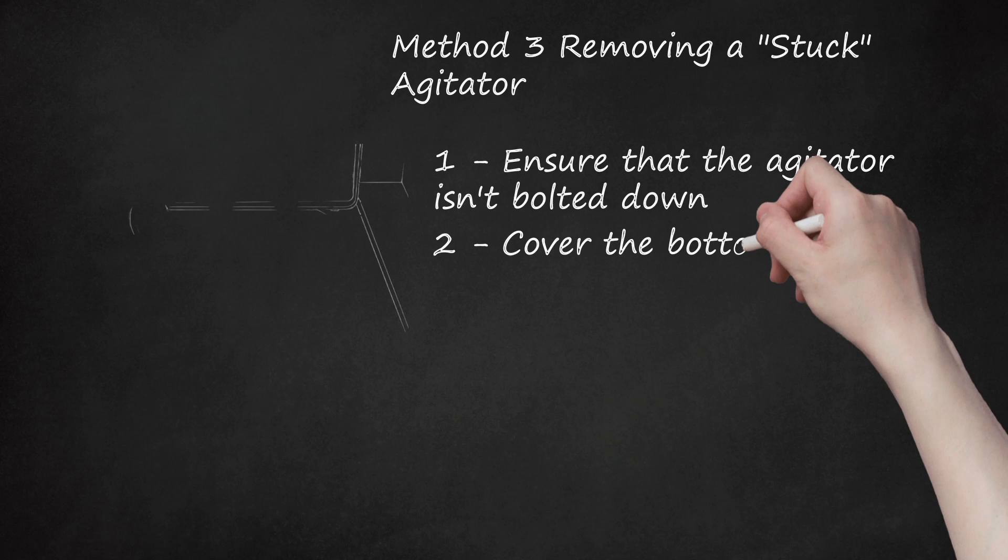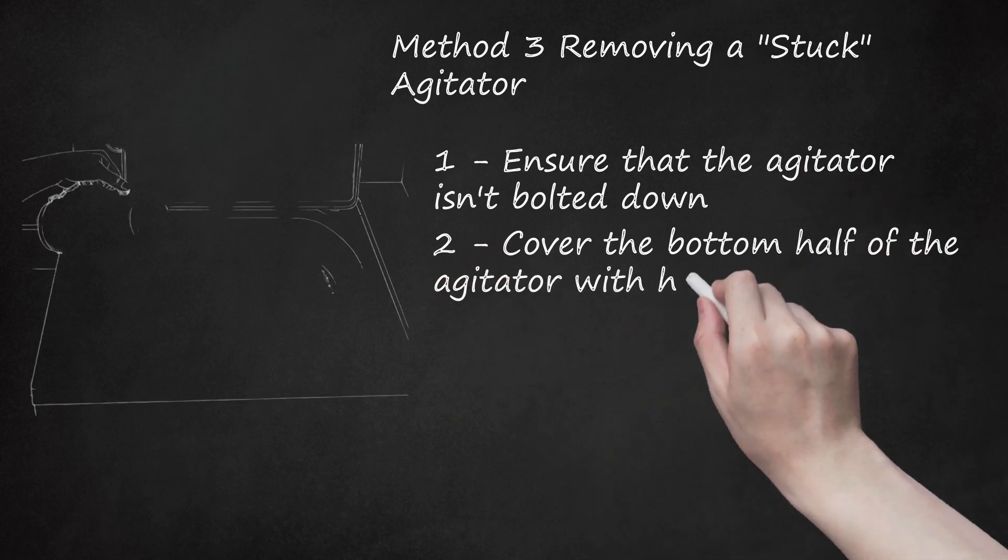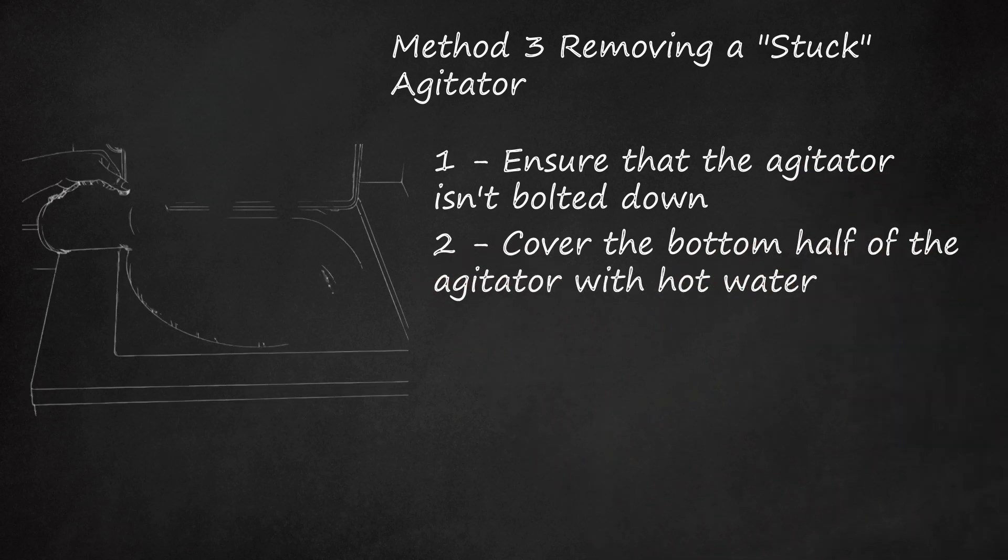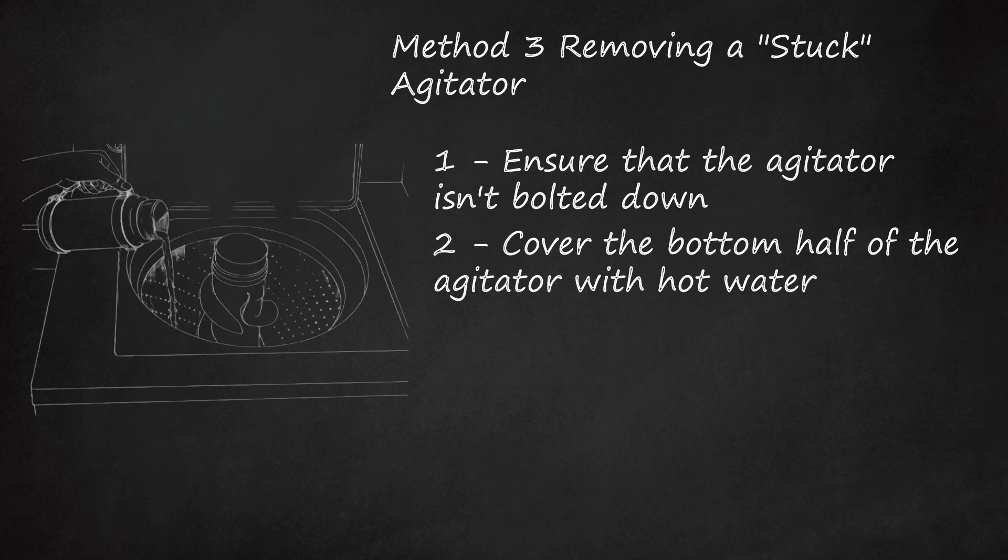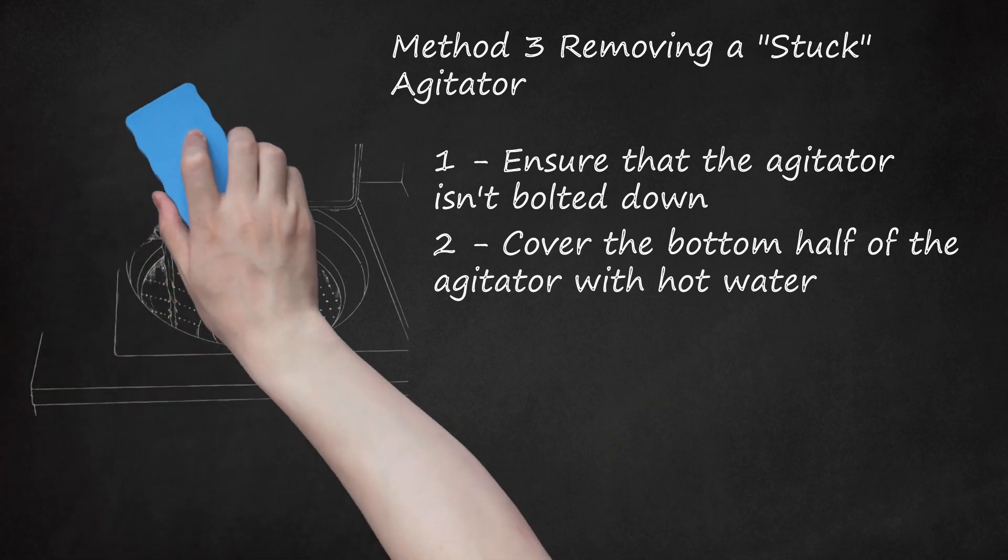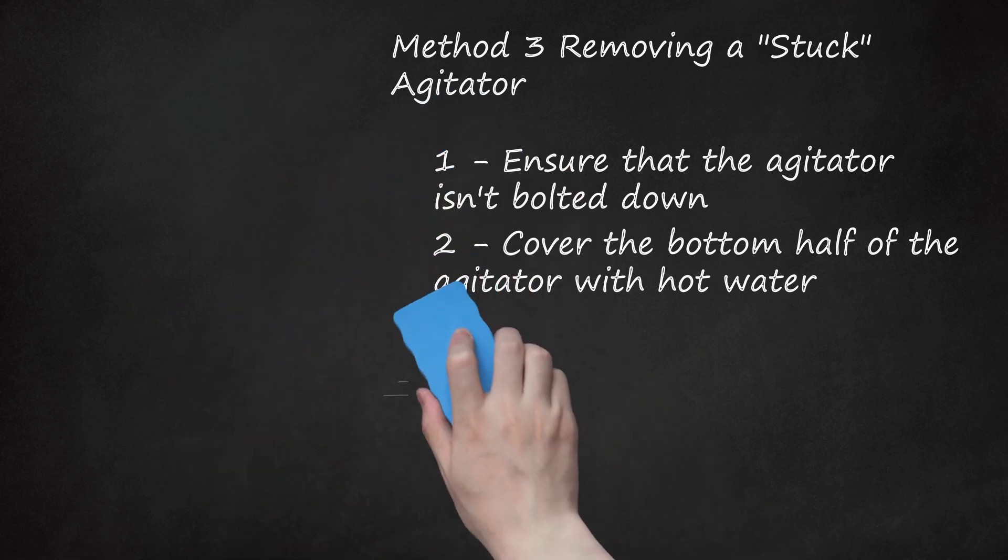Step 2: Cover the bottom half of the agitator with hot water. To begin, fill the washing compartment with about 6 inches or so of hot water, enough to completely cover the bottom of the agitator. This will help loosen any built-up soap and chemicals, making removal slightly easier. To be clear, you don't want to start a wash cycle with hot water. You only want to add hot water to the washing compartment. Attempting maintenance on your washing machine while it's on is always an unwise idea.